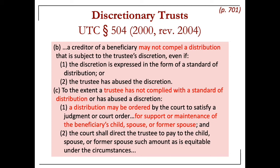Regarding creditors for torts: they cannot reach the trust because they are not included in the exceptions to this rule. You see child, spouse, and former spouse listed, but not beneficiaries of an intentional tort claim trying to satisfy that claim from a trust. There was a very moving example in the book about cases where tort creditors can't reach a trust's money.